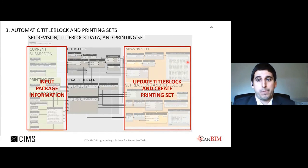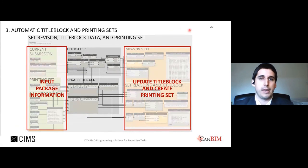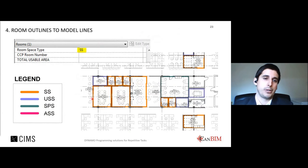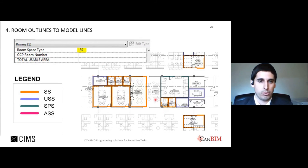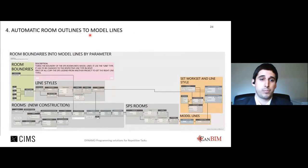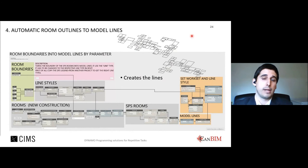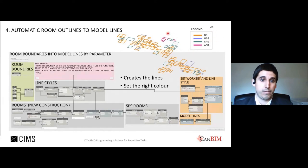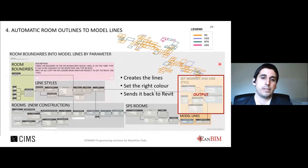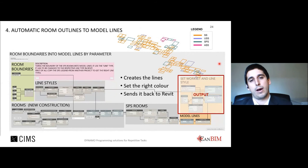Example five: automating color-coded room diagrams. The client required colored line boxes based on room space type. Every time a particular room space type was modified, all lines had to be updated and the color changed if the type changed — something easy to forget. The Dynamo script creates the lines, sets the right color for each space type, and sends everything back to Revit. You can run it every day in seconds, whereas doing it manually takes a long time.